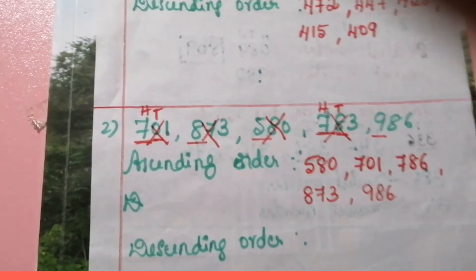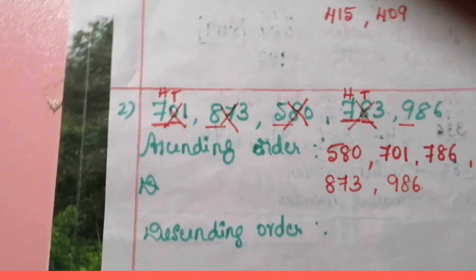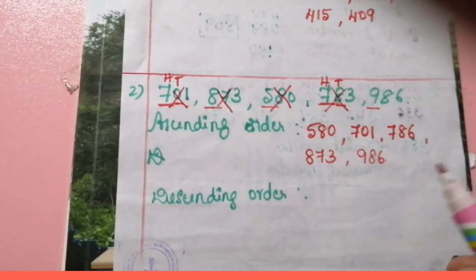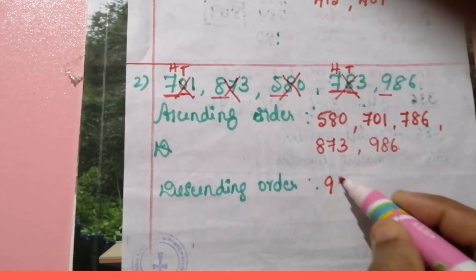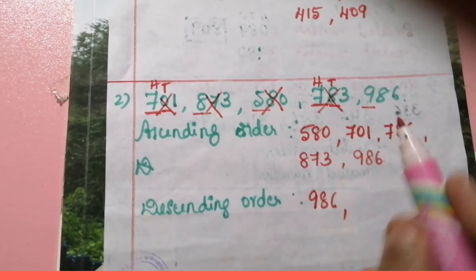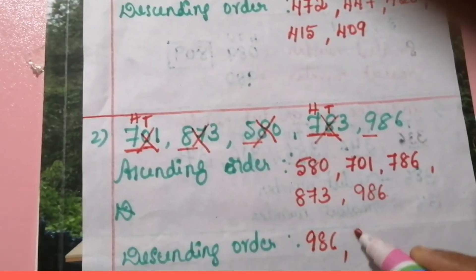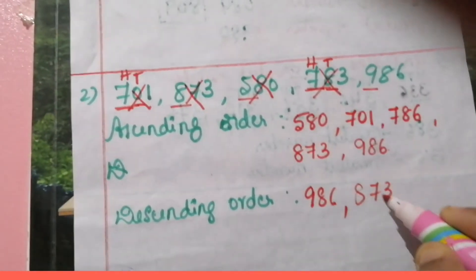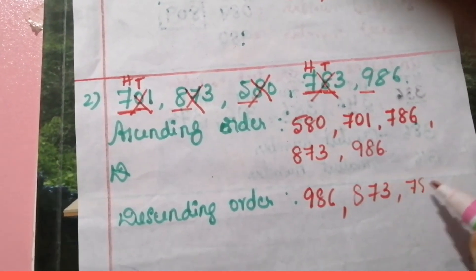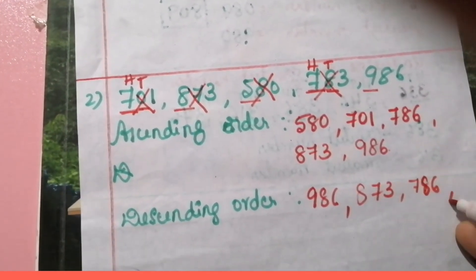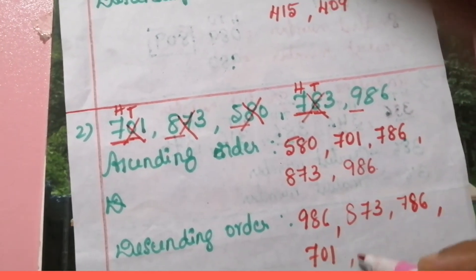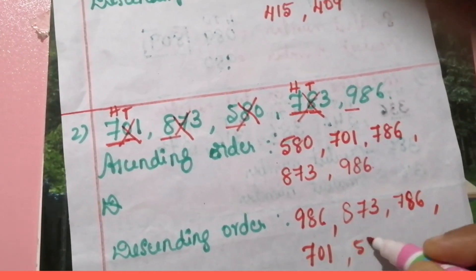It is very easy to arrange in descending order. So the descending order is: nine hundred and eighty-six, eight hundred and seventy-three, seven hundred and eighty-six, seven hundred and one, and five hundred and eighty.